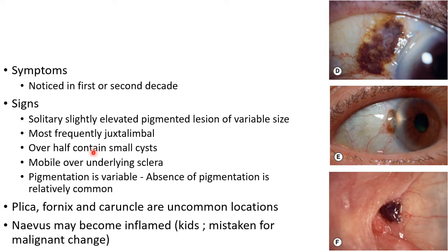Over half of conjunctival nevi contain small cysts. They are mobile over the underlying sclera. The pigmentation of conjunctival nevus is variable, and absence of pigmentation is also relatively common.